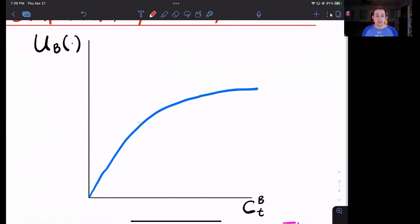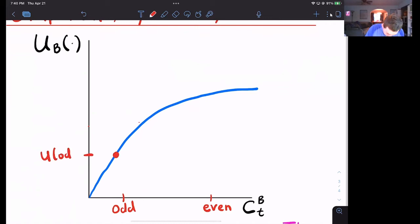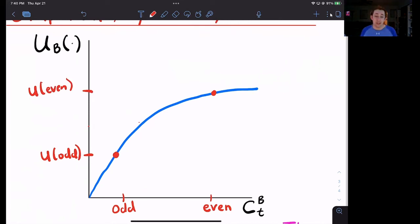Now, let's say that Bill does not smooth his consumption, so maybe he eats this number of coconuts in odd periods, and maybe he eats this number of coconuts in even periods. Well, in the odd periods, he has low utility. This is his utility in odd periods right here. And in even periods, he has a lot of coconuts, so his utility is really high. It's all the way up here, and here is maybe his utility in even periods. Now, what I'm going to do is I'm going to connect a straight line between Bill's odd period consumption and his even period consumption. And so I'm going to go like this. Why am I doing this?